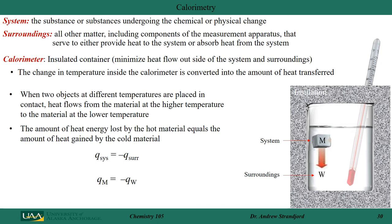Let's talk about system and surroundings one more time. The substance or substances undergoing the chemical or physical change is called our system — in the case of our beaker, that is the metal cube. The surroundings include all other matter, including the components of the measurement apparatus, such as the beaker and everything else.